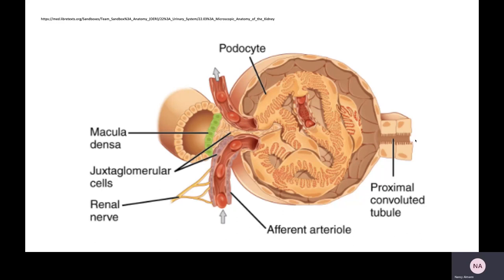From there it will move into the proximal convoluted tubule, then the nephron loop or loop of Henle, and then the distal convoluted tubule. To summarize, filtration occurs because of a pressure buildup in the glomerulus, forcing anything small enough — whether the body needs it or not — out into the filtrate in Bowman's capsule, which then moves into the tubule.